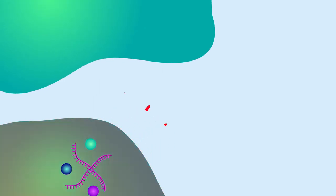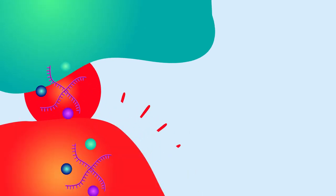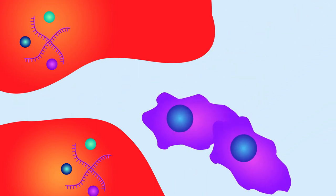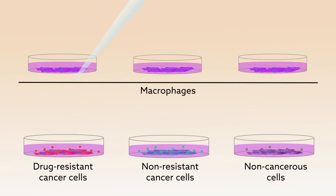Because microparticles help cancer cells spread harmful traits to recipient cells, the researchers thought these particles might also play a role in immune evasion. To test this hypothesis, the group collected microparticles from drug-resistant and non-resistant breast cancer cell lines and non-cancerous cell lines, and then mixed them with macrophages.